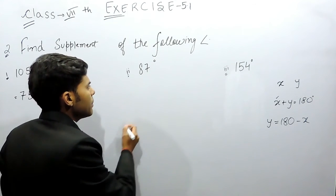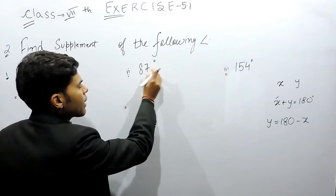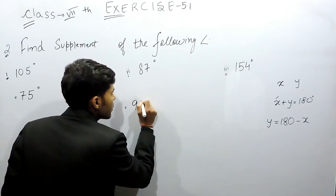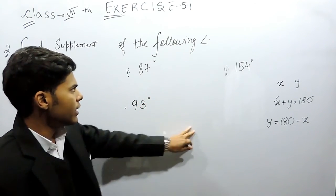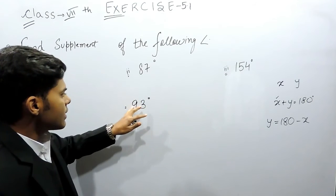Now here it will be 180 minus 87, that will be equals to 93 degrees.